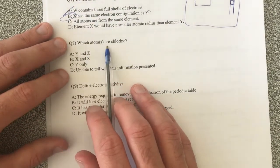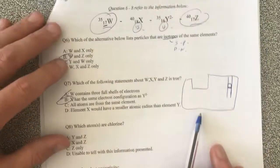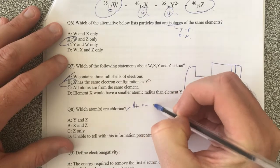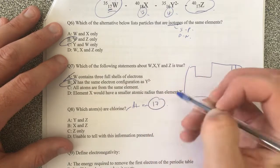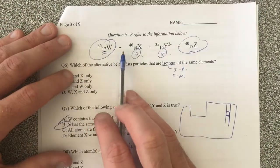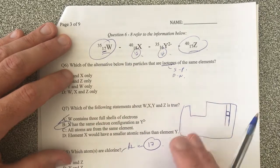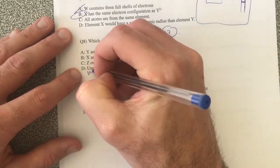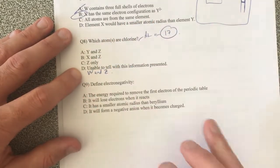Which of the following atoms are chlorine? All righty. So chlorine has atomic number of 17. So if I look at this, atoms that are chlorine are W and Z. And there's no option for that, but it is W and Z.